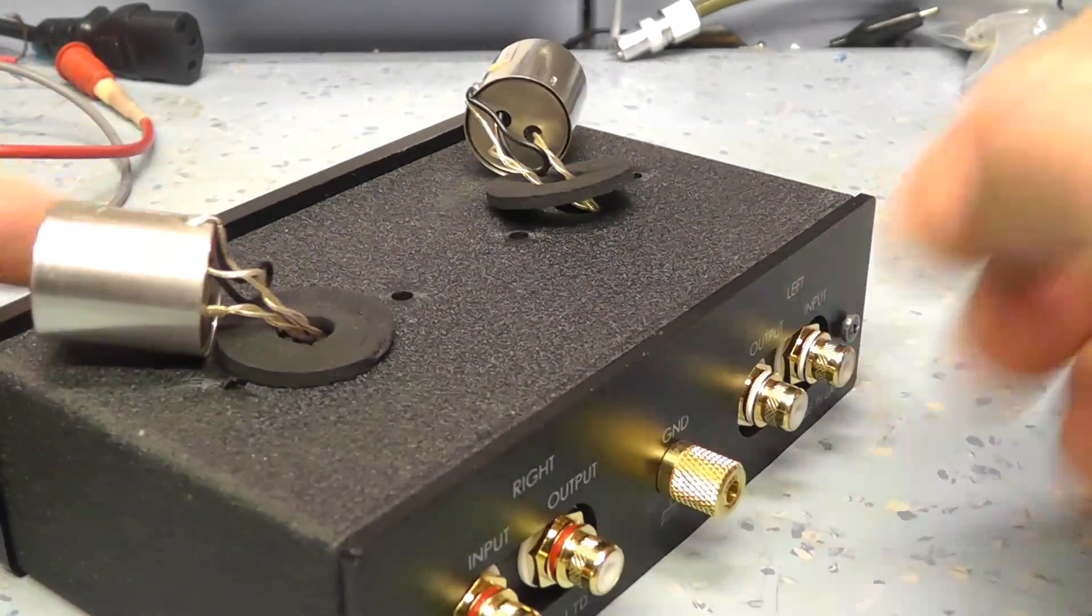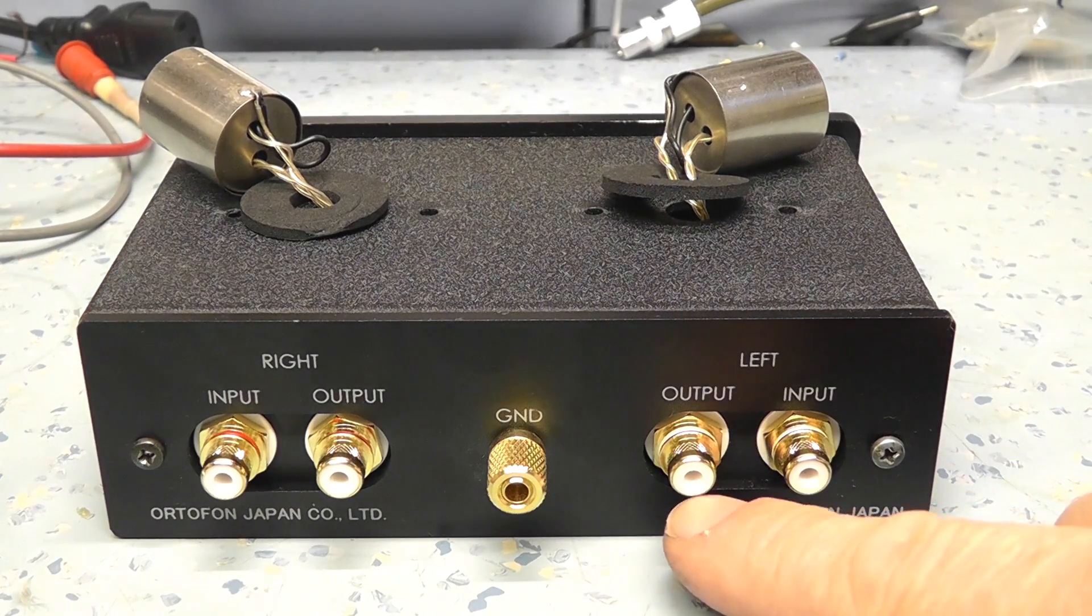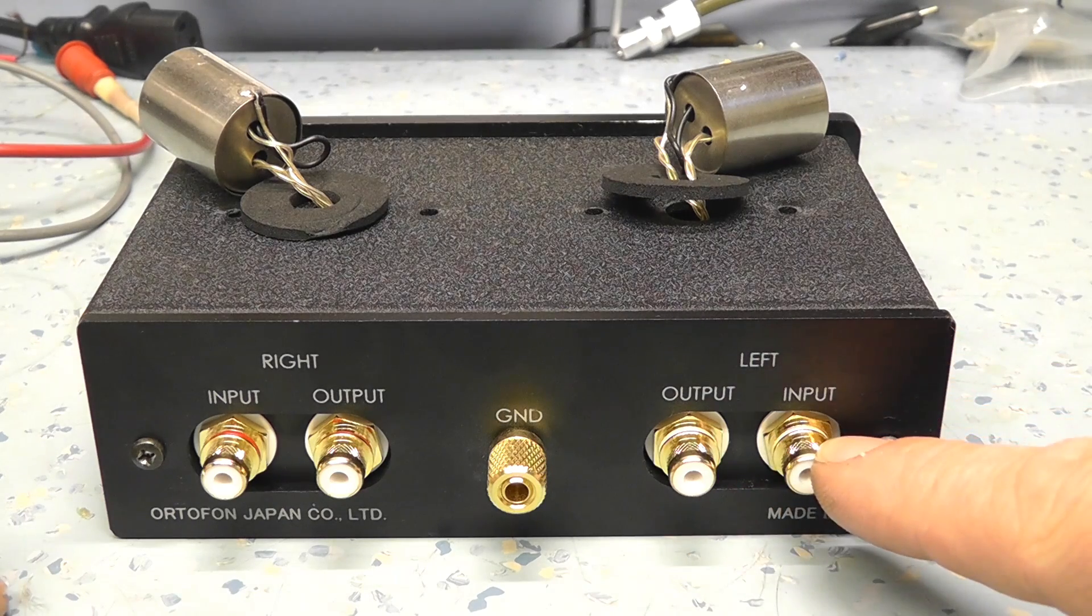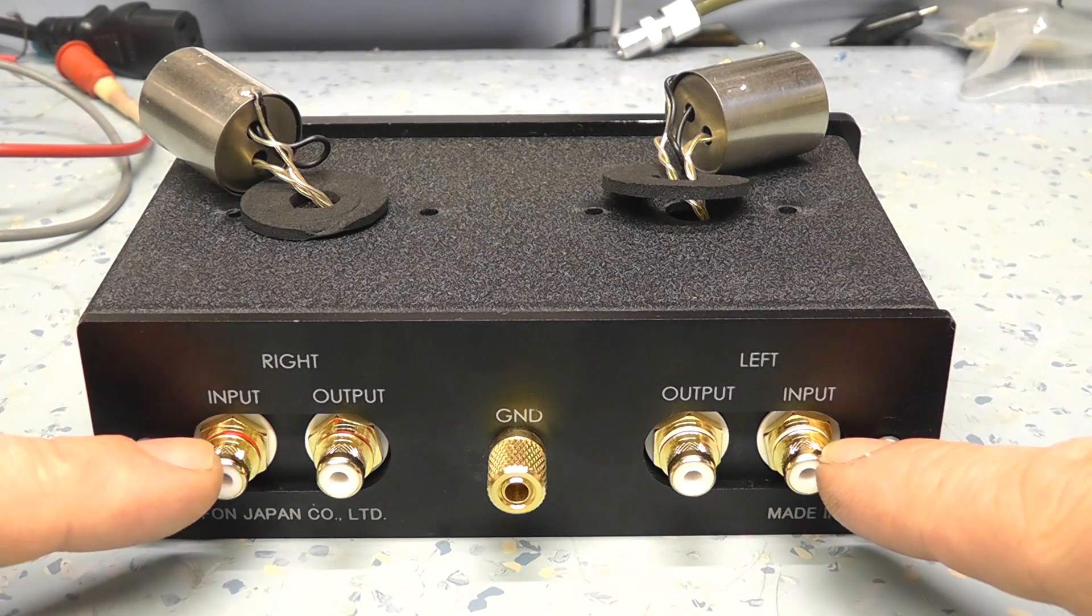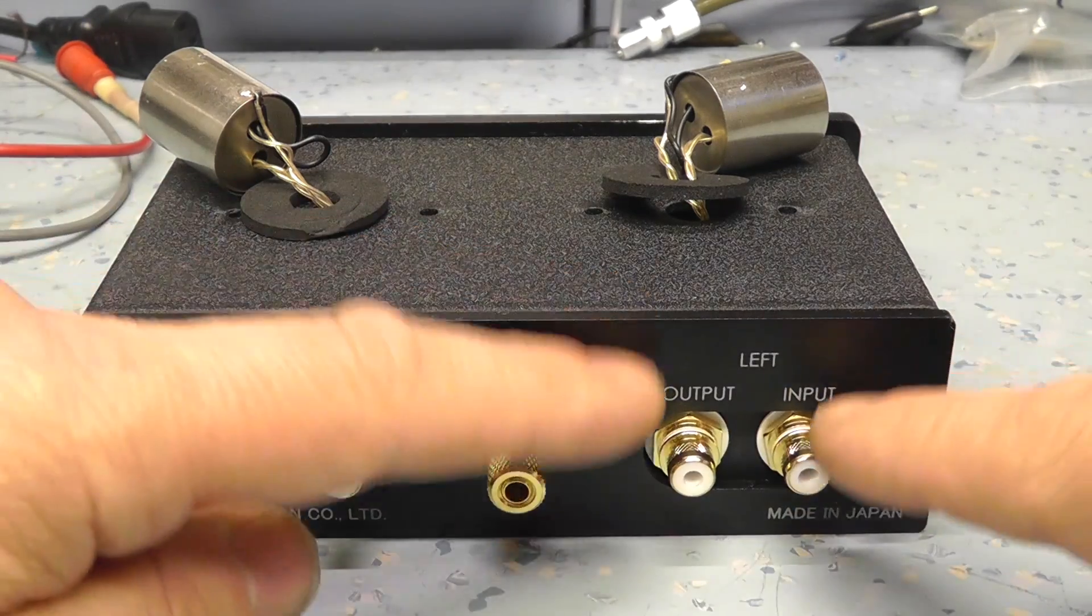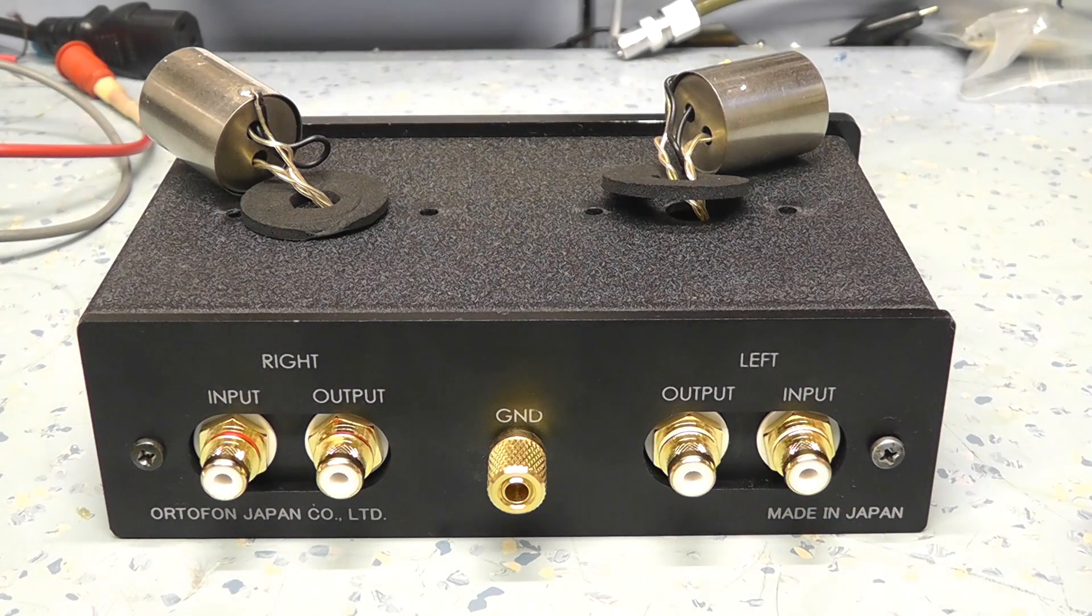Around the back is the inputs and the outputs. So basically you plug your tone arm into the input connection. So input for the left and input for the right. And then the outputs are taken here. Strange way of doing it. You think the inputs will be here and the outputs will be here or vice versa. But no, they've got them sort of, probably to keep the cross-talk best as possible.